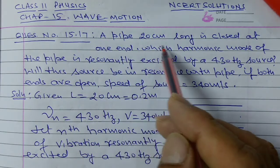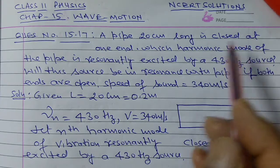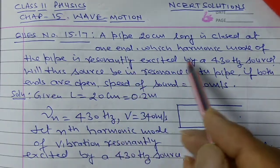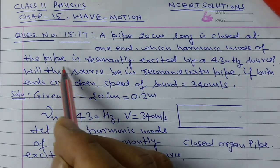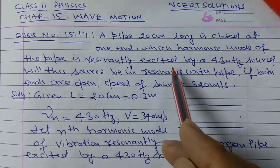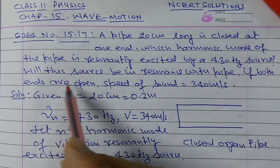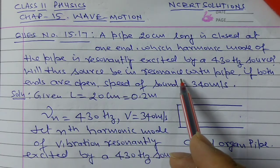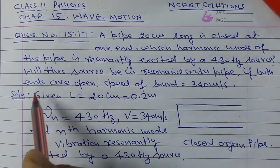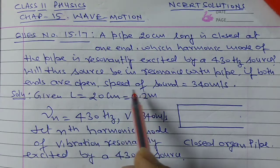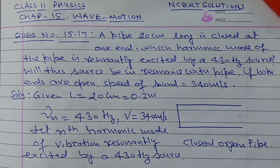17: A pipe 20 cm long is closed at one end, which harmonic mode of the pipe is resonantly excited by a 430 Hz source? Will this source be in resonance with the pipe if both ends are open, given that the speed of sound is 340 m per second?